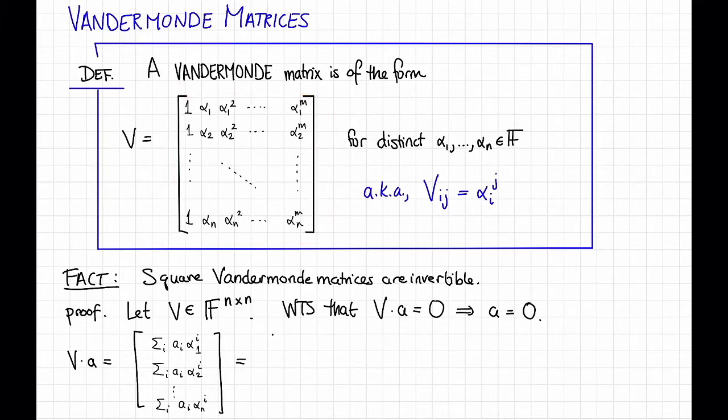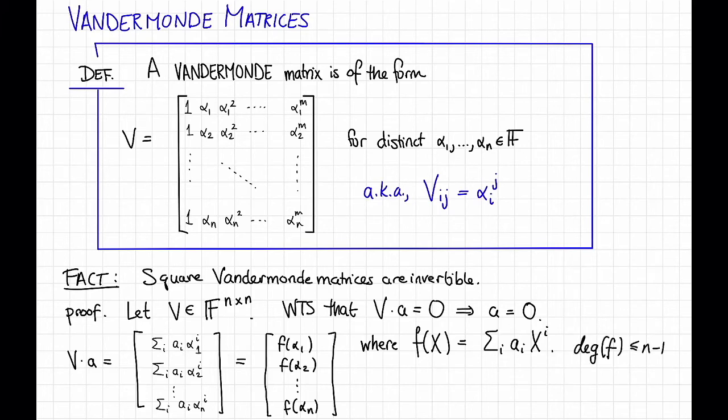Here this is just the definition of matrix vector multiplication when the matrix in question looks like this. But now this equals the vector with entries F(alpha_1), F(alpha_2), dot dot dot, F(alpha_n), where F(x) is the polynomial sum over i, a_i * x^i. Notice that the degree of this F is less than or equal to n-1, since this sum goes from 0 to n-1.